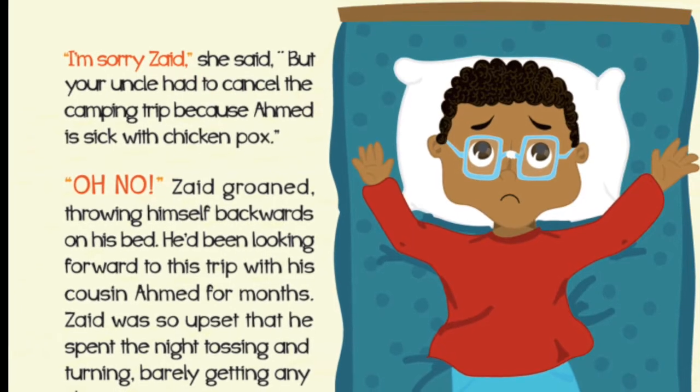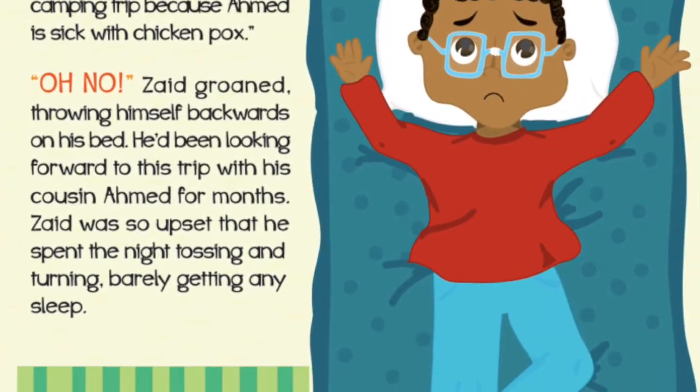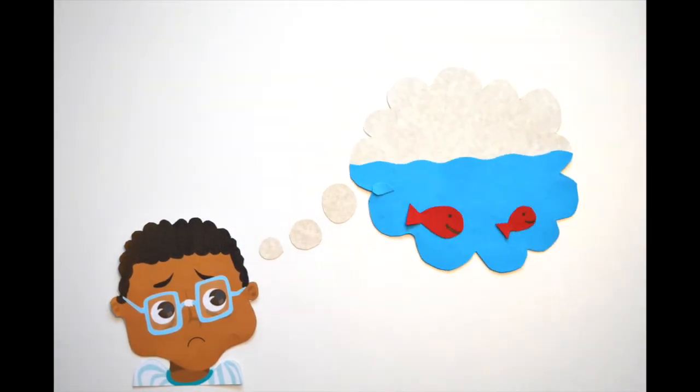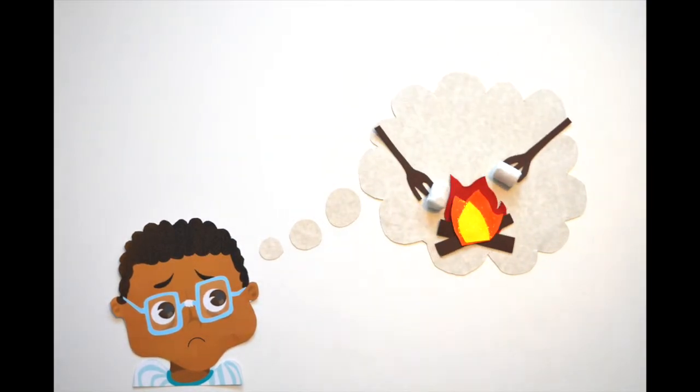When Zaid finds out that his camping trip is cancelled, he's sad and disappointed. He won't get to play in the lake or melt marshmallows over the campfire. A small cloud appears over his head.